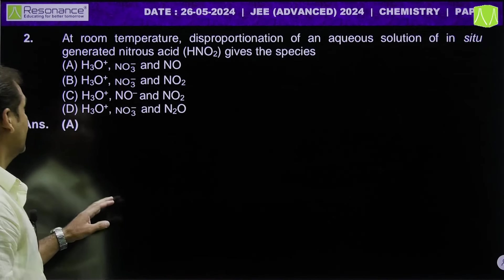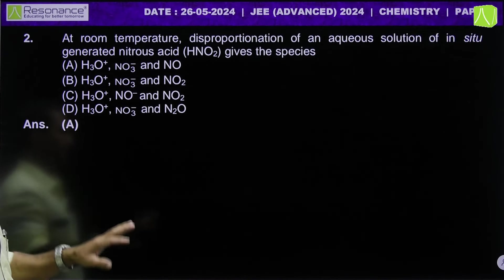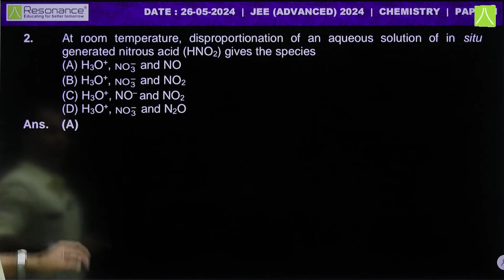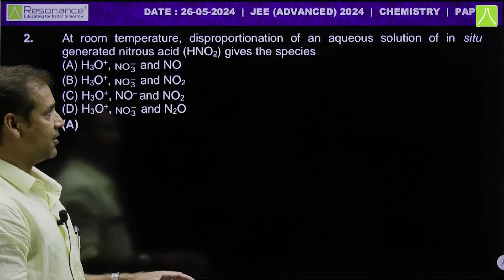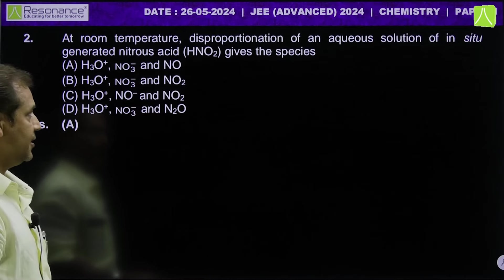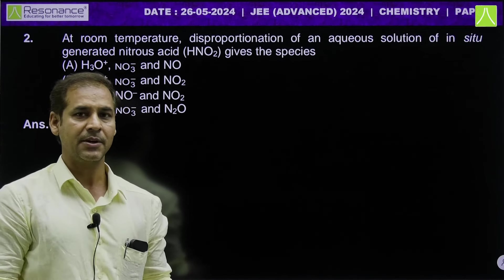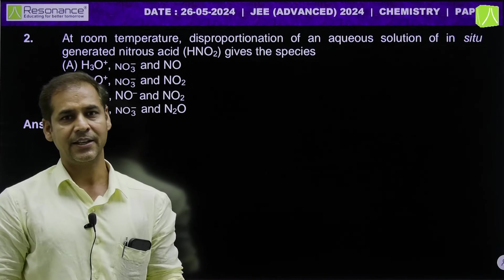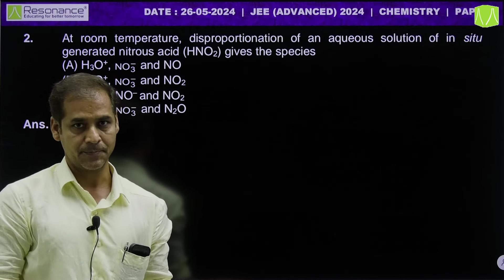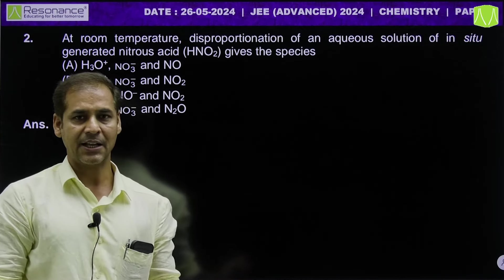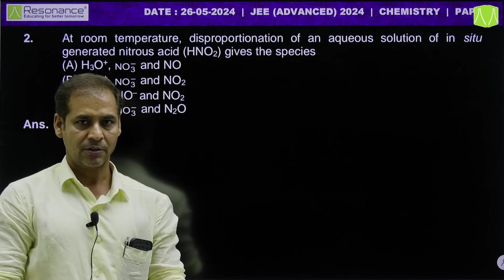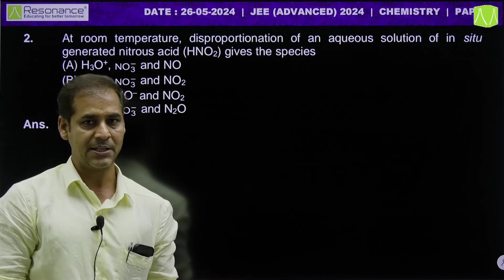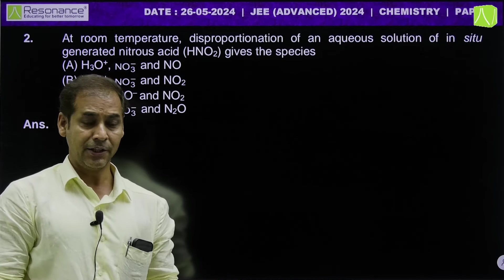Pyaare Bacho, let us take the first question of inorganic, which is very simple. It comes from NCERT. At room temperature, disproportionation of an aqueous solution of in-situ generated nitrous acid gives certain species. We need to understand that nitrous acid, HNO2, is stable only at 0 to 5 degrees centigrade in water. At room temperature or above, HNO2 will disproportionate.